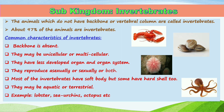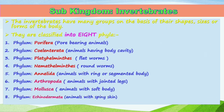Invertebrates consist of about 97 percent of the total animals. They have many groups based on their shape, size, or body form, and it is difficult to study them by placing them in a single group. These animals are therefore classified into eight phyla according to their shape, size, or body form.